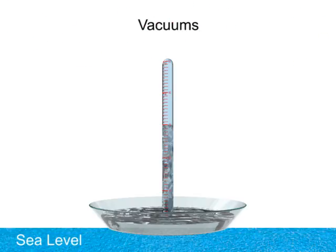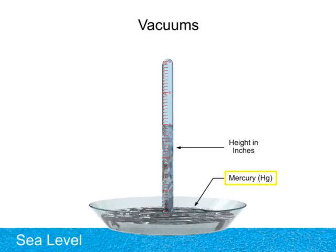A vacuum can be thought of as negative air pressure and is measured with any set of force per area units. In the customary U.S. system of units, atmospheric pressure and vacuum pump force are measured in inches of mercury, abbreviated Hg, which is the atomic symbol of mercury.